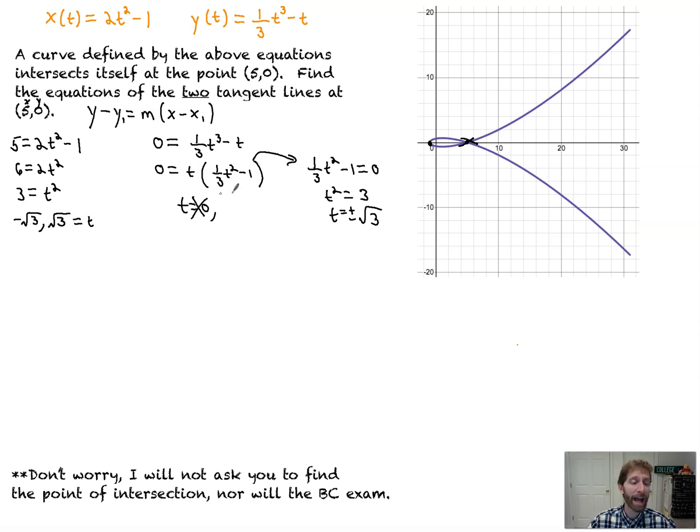So it's the time or times that are the same that we're concerned with. So it's at negative root 3 and positive root 3 that we have the point (5,0) occurring. Great! So we've got the point (5,0), which we're going to use in our tangent line. Now we need the slope.